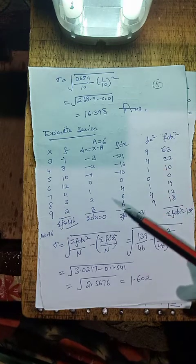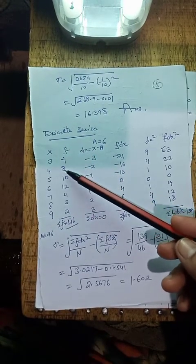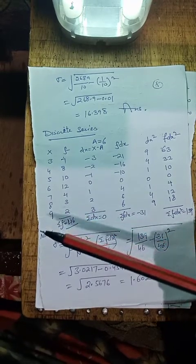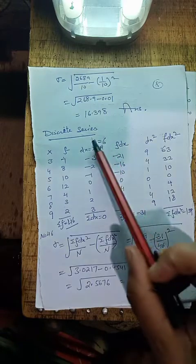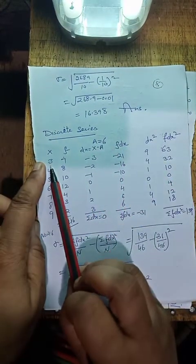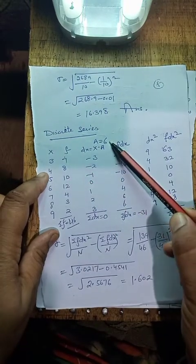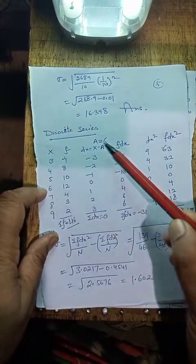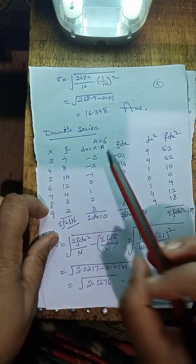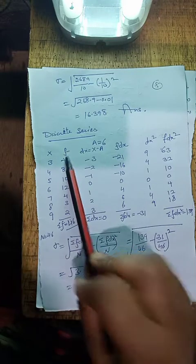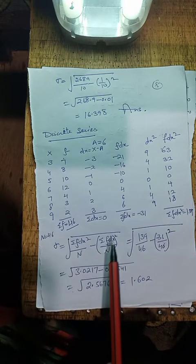Similarly, in case of discrete series: x = 3, 4, 5, 6, 7, 8, 9 and frequency = 7, 8, 10, 12, 4, 3, 2. इसमें भी सबसे पहले हम dx निकालते हैं। dx means x minus a, a = any value. इस example में हमने a = 6 माना है। x में से 6 subtract करने पर: 3−6 = −3, 4−6 = −2, 5−6 = −1, 6−6 = 0, 7−6 = 1, 8−6 = 2, 9−6 = 3. Formula: square root of (summation f·dx² / n) minus (summation f·dx / n) whole square.